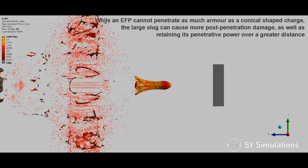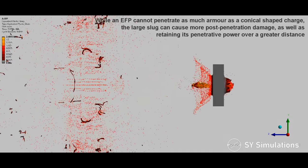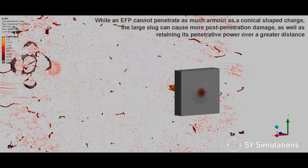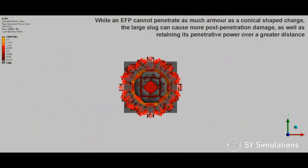While an EFP cannot penetrate as much armor as a conical shaped charge, the large slug can cause more post-penetration damage as well as retaining its penetrative power over a greater distance.